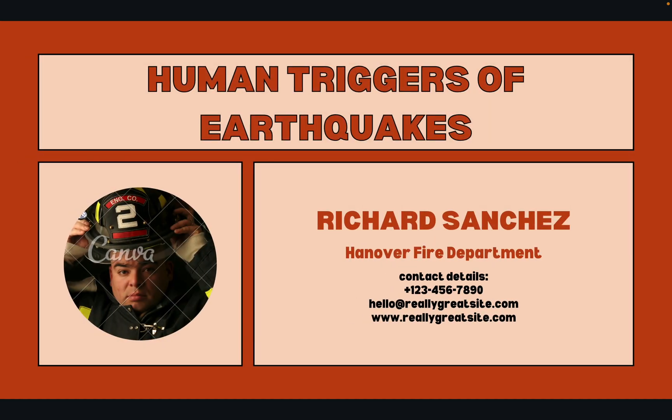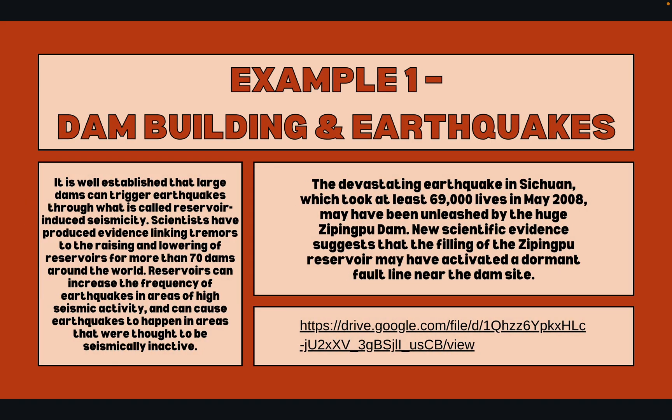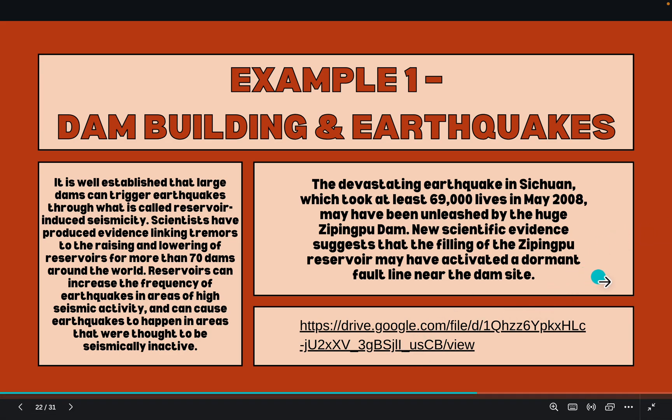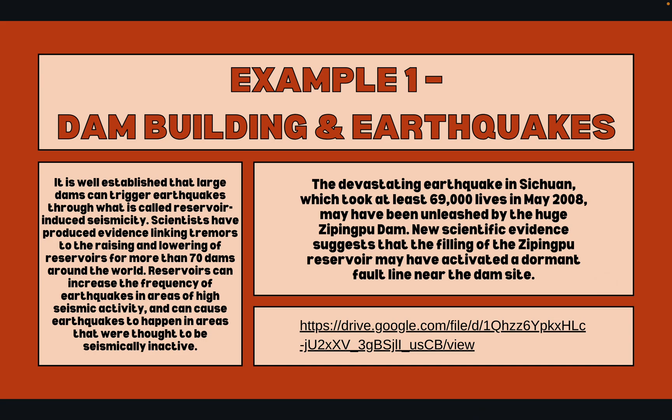Human triggers of earthquakes. The first example is dam building and earthquakes. In Sichuan, China, the construction of the Zipingpu Dam caused an earthquake. I'll add a link in the description below. Another example is a quarry — a kind of mining facility — which caused a 5.4 magnitude earthquake triggered by humans. I've also included a link for that below.